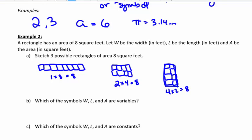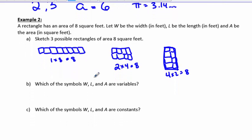Which of the symbols L, W, and A are variables? The area is fixed at 8. The area must be 8, so the area is not a variable. But the width and the length were not given to us. We were able to draw different widths and different lengths to make a rectangle, so those are variables. The symbol A is a constant, because I know that in this example, A must always be 8.